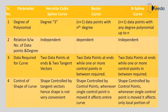Second is the relation between number of data points and degree of polynomial. In Hermite cubic spline curve, the degree of polynomial is independent of the number of data points, so it is an independent relationship. In Bezier curve, the degree of polynomial depends upon the number of data points, so it is dependent. In B-spline curve, the degree of polynomial is also independent of the number of data points.